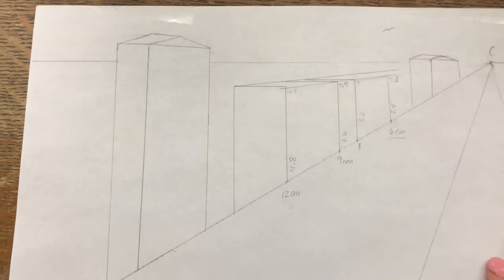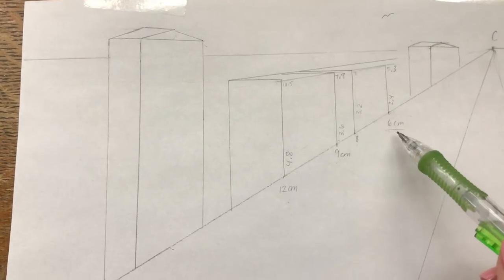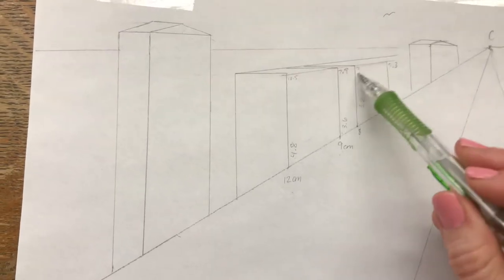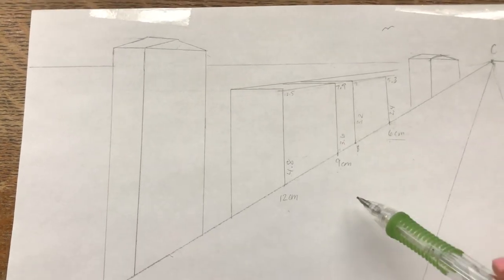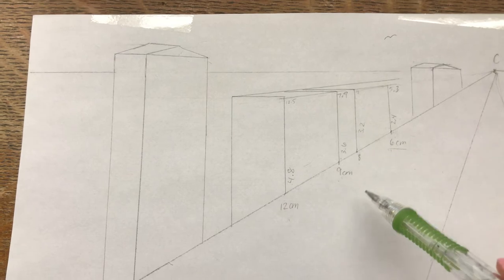So on your buildings you could write in really light in pencil your measurements, and then eventually you're gonna go back and erase them because you don't want them to be on your final copy.